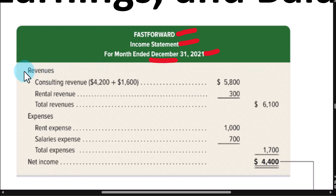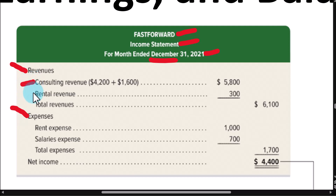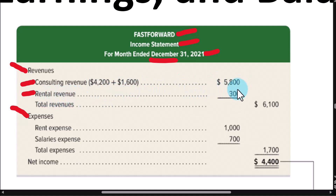The income statement is divided up into two parts. Here are the different ways of making money, called revenue, and here are the different ways of using up costs for a company, called expenses. In our company, we have two different types of revenue. We have two revenue accounts: one for consulting revenue, where we recorded two different amounts being earned — this is the total for the whole period — and the other revenue was renting out our facilities for $300. We group them into one column and put the subtotal under the next column.